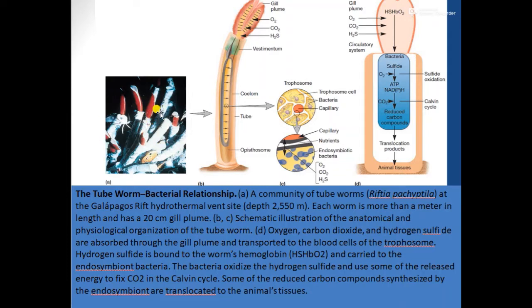The tube worm takes up hydrogen sulfide from the seawater and binds it to its hemoglobin. The hydrogen sulfide is then transported in this form to the bacteria, which utilize its sulfate-reducing power to fix carbon dioxide in the Calvin cycle. The carbon dioxide required for this cycle is transported to the bacteria in three ways: freely dissolved in the blood, bound to hemoglobin, and in the form of organic acids such as malate and succinate.